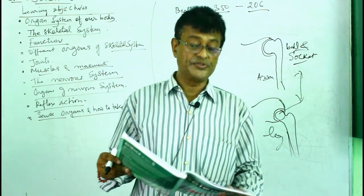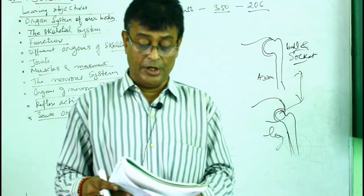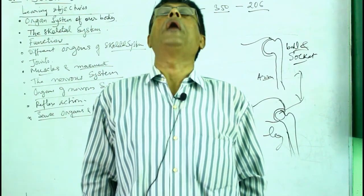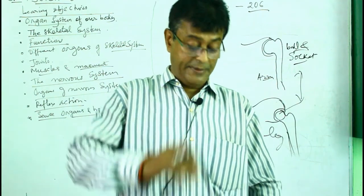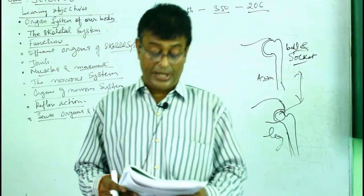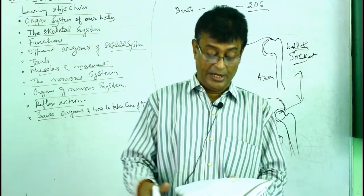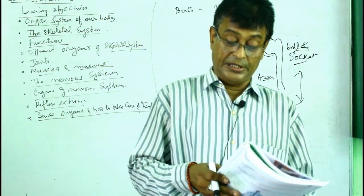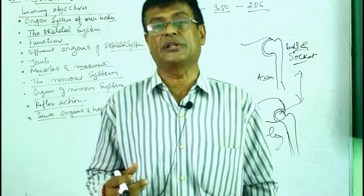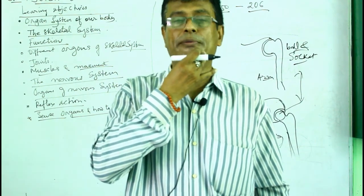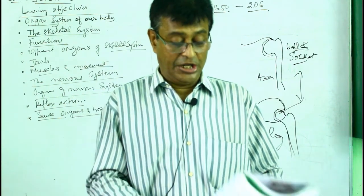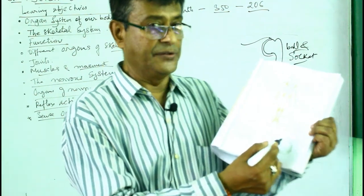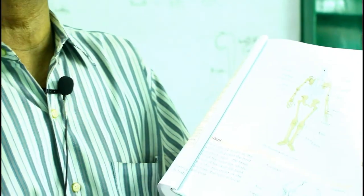The ball and socket joint allows movement in all directions. We also have the pivot or pivot joint which is present in the backbone and enables movement up and down. There are also gliding and sliding joints found in the wrist. Immovable joints are joints which never move - these are the joints of the skull. The skull has 22 bones and on the facial side there are 14 bones.